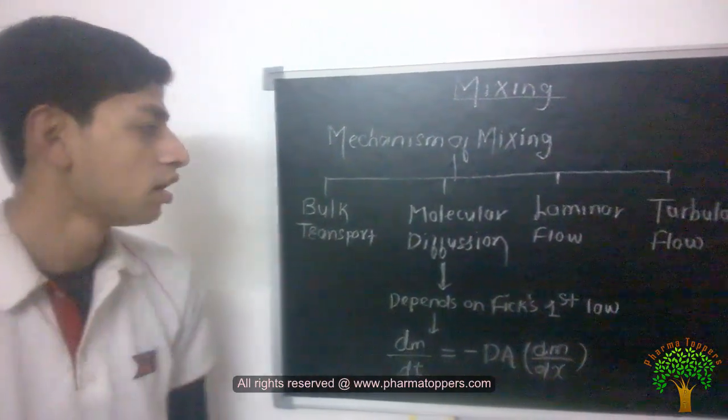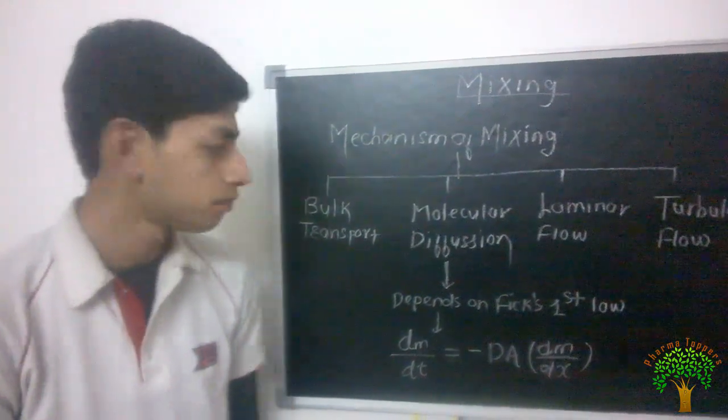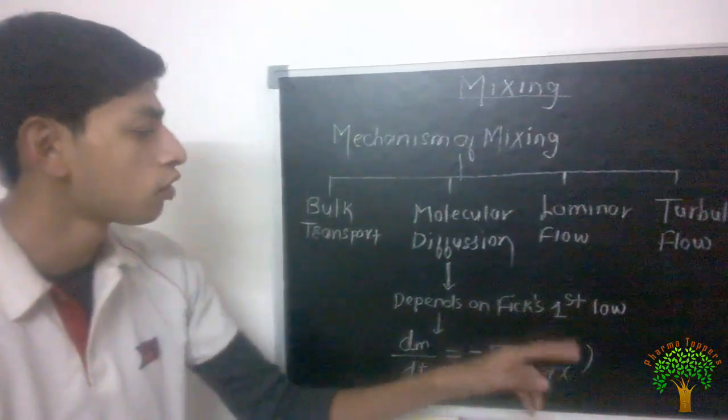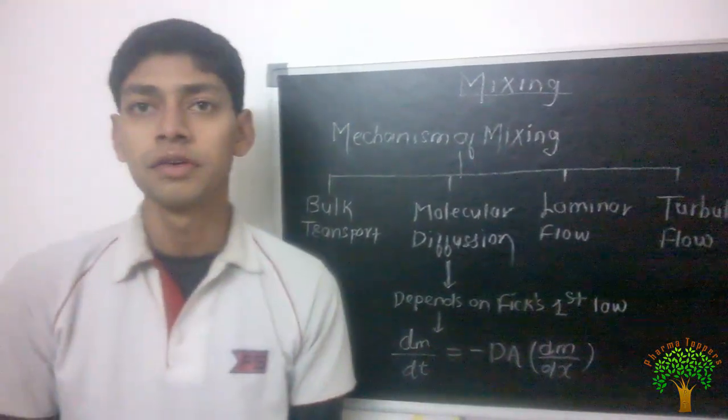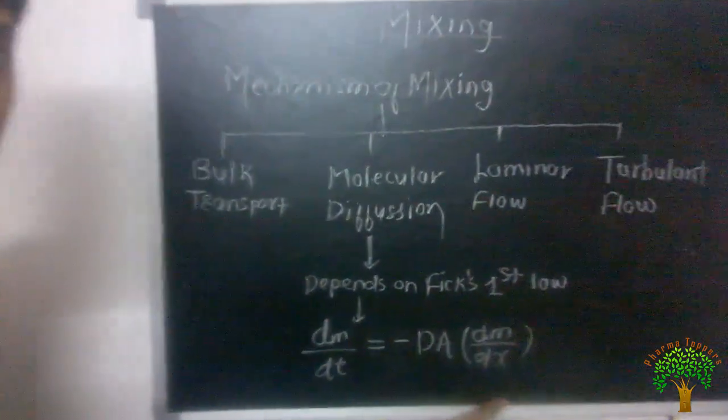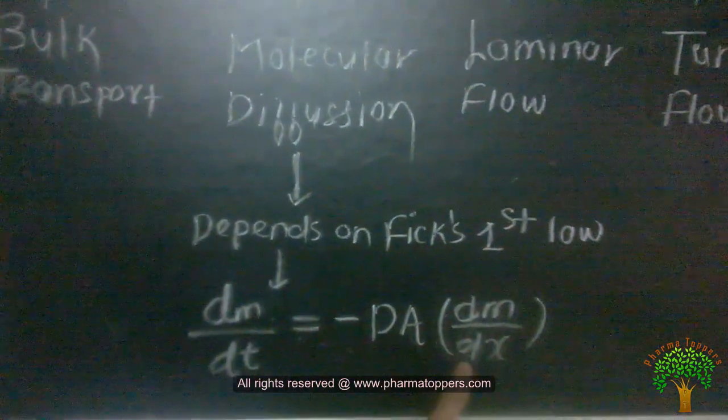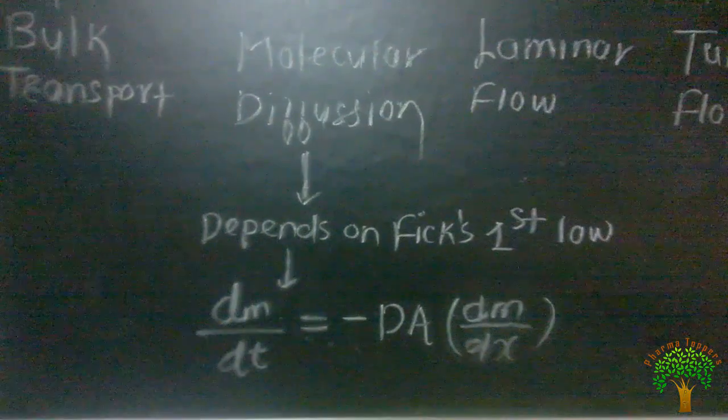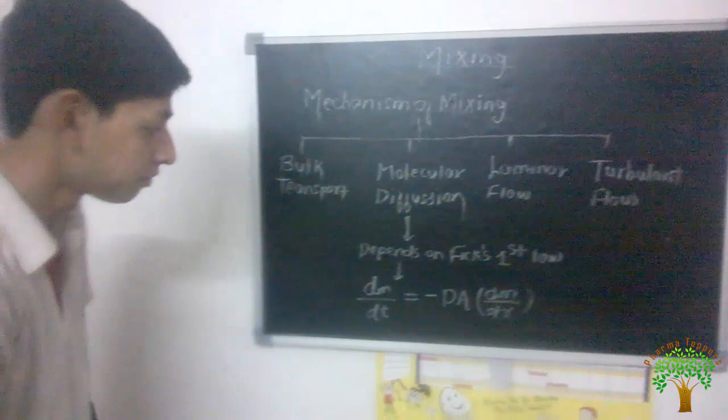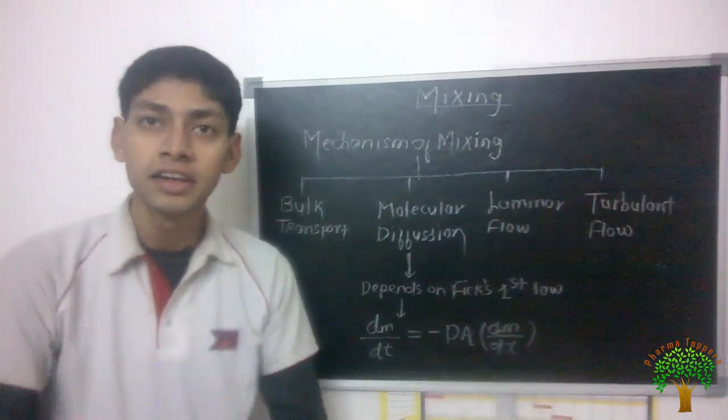Second one is molecular diffusion. Molecular diffusion is a primary mechanism for the mixing process. Most of the mixing can be done by molecular diffusion only, and it depends on Fick's law. According to Fick's first law, dm/dt is equal to minus dA dm/dx. Here dm/dt is the rate of diffusion while dm/dx is the concentration gradient. So we can say that diffusion is directly proportional to the concentration gradient. And here A is the surface area. As the surface area increases, the mixing process also will increase.